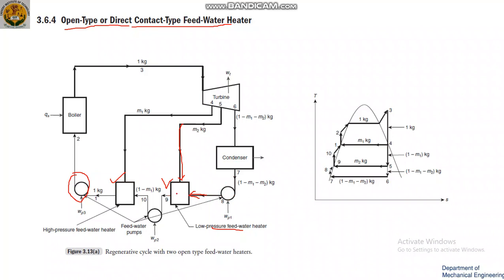Because all the pressure drops, that is why there is another pump. That additional pump handles the high pressure feed water heater stage. The mixture is then pumped up to boiler pressure.